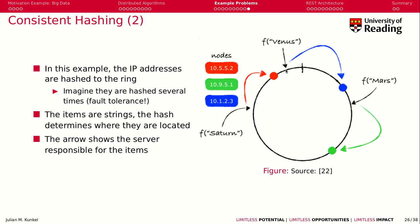Let's assume I have three items — Venus, Mars, and Saturn — these are my keys. The data can be arbitrarily big. I want to identify on which server they should live. In this example I have three server nodes: the red server, the blue server, and the green server. I hash the IP addresses, which gives them a place on this ring, and as our items are strings, I also run a hash function on those items, placing them on the ring as well.